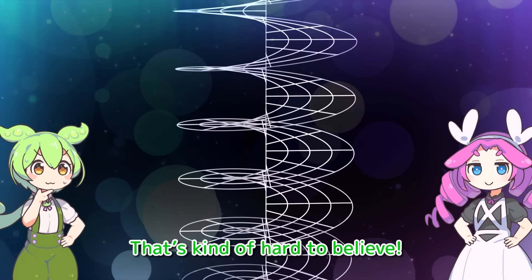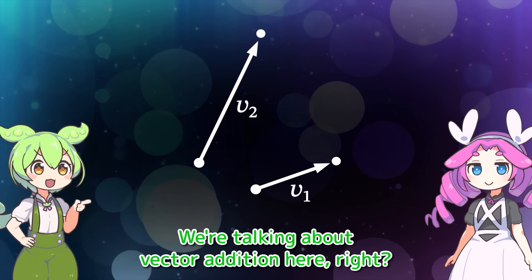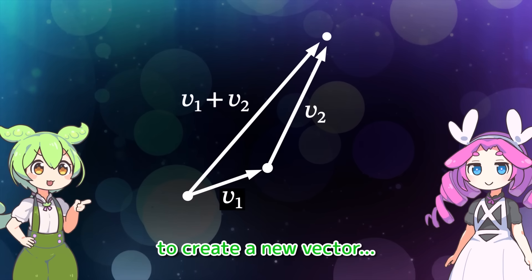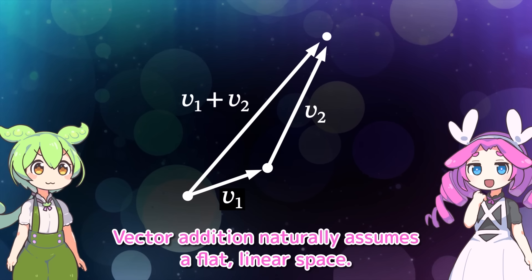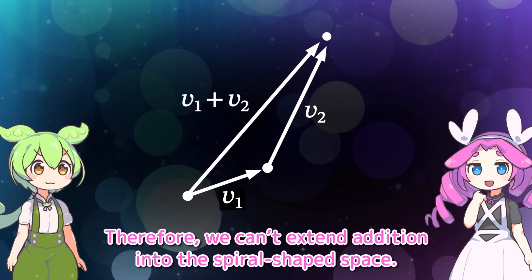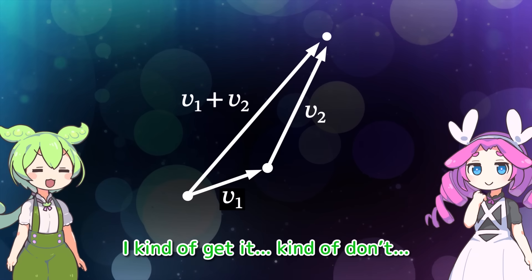But in exchange for that freedom, this space lost something important. And that is addition. What did you say? Addition is gone? What does that even mean? In fact, addition doesn't exist in this space. In other words, we can't extend addition into the spiral-shaped space. Really? That's kind of hard to believe.